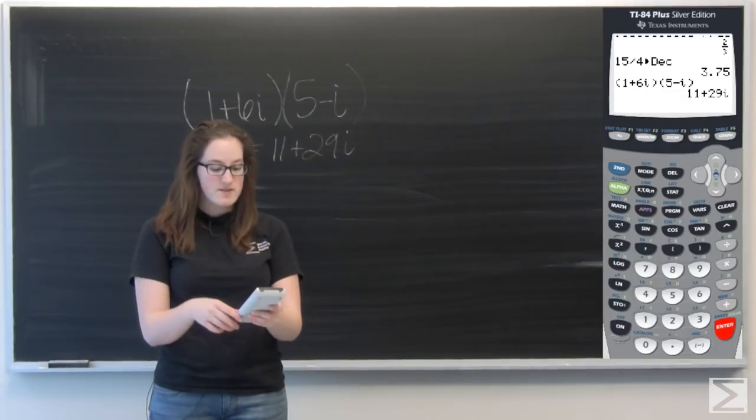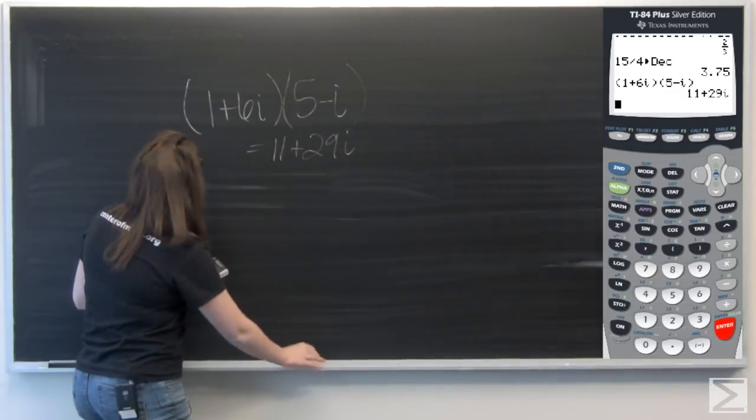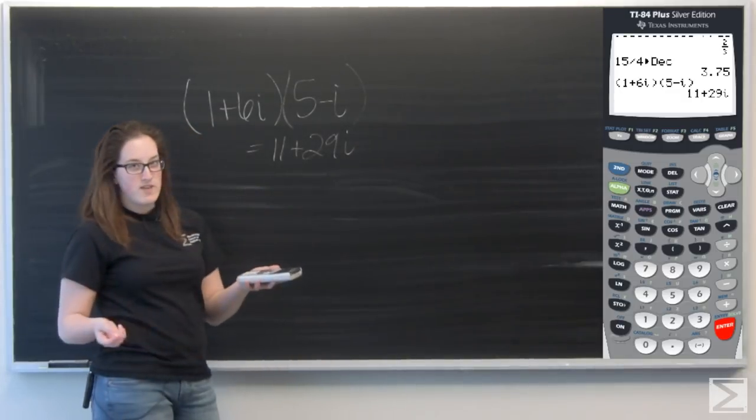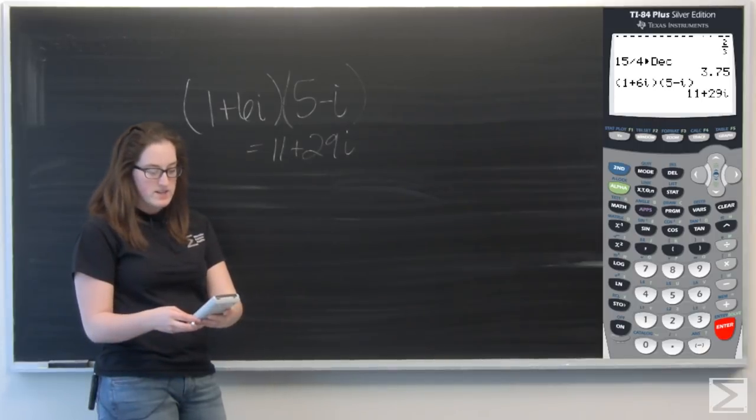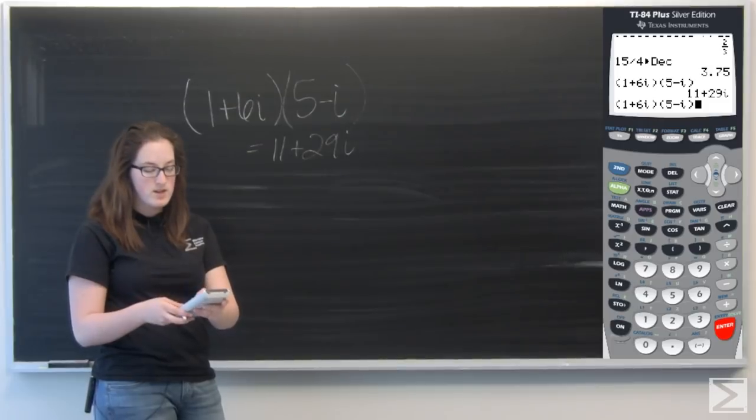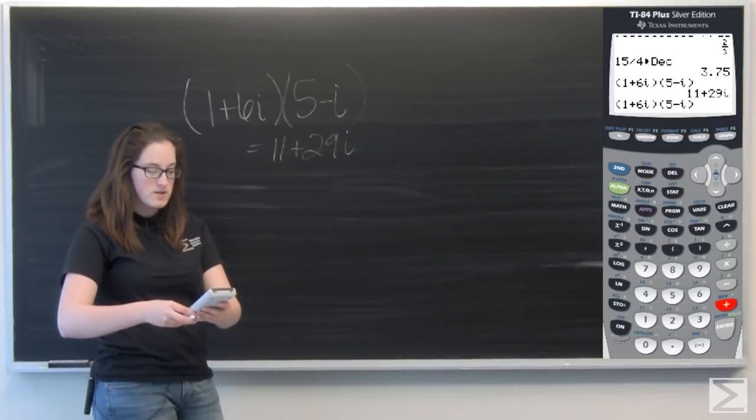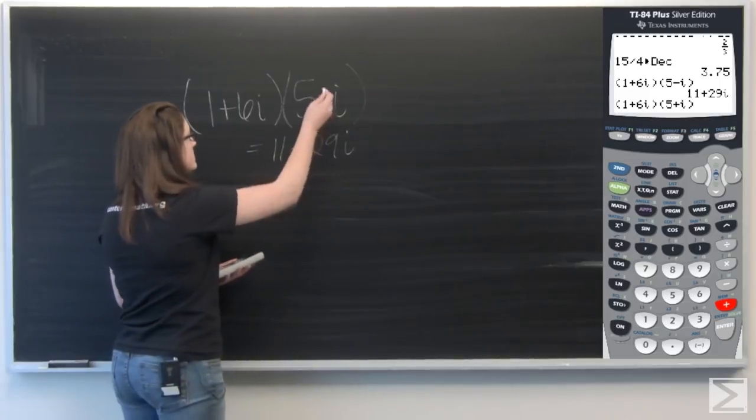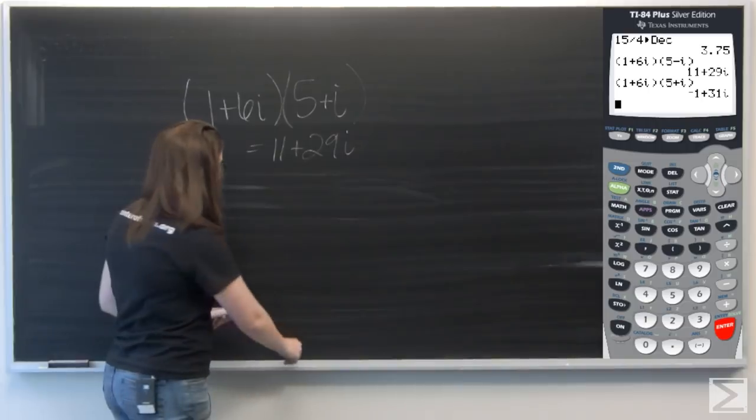Another helpful thing is second enter on the calculator. So let's say I type this in, but I actually want it to be 5 plus I. Instead of writing the whole thing out again in the calculator, I can hit second enter. And then it pulls up what I just typed. So I can go over, change that minus sign to a plus. And now I have the answer that I really needed.